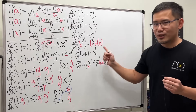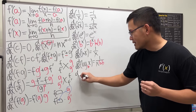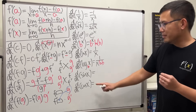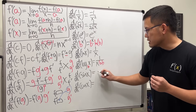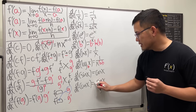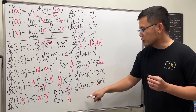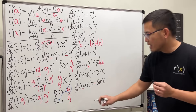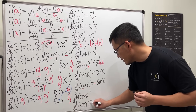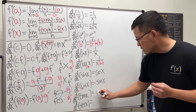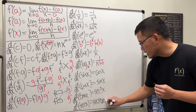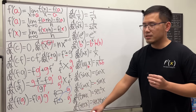Now for trig functions. The derivative of sin(x) is positive cos(x). The derivative of cos(x) is negative sin(x). One way to remember the negative: cosine starts with a 'c,' and all trig functions starting with 'c' have a negative derivative. Next, the derivative of tan(x) is sec²(x). The derivative of sec(x) is sec(x) times tan(x) — both positive because neither starts with 'c.'